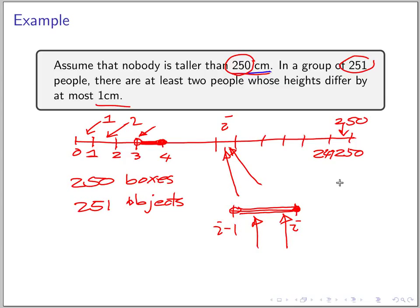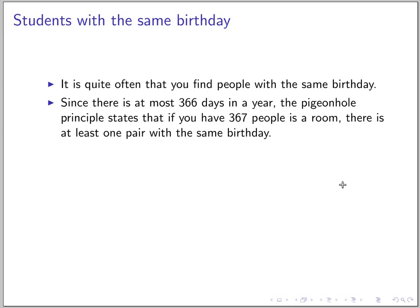pigeonhole principle to prove this. Alright, so let's look at another situation. Now we look at the birthday problem. It's quite often that you find people with the same birthday. Since there is at most 366 days in a year, the pigeonhole principle states that if you have 367 people in a room, there is at least one pair with the same birthday.